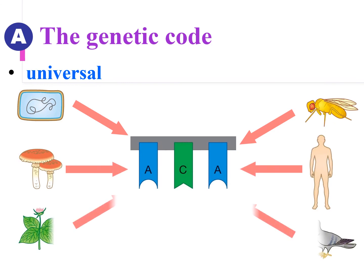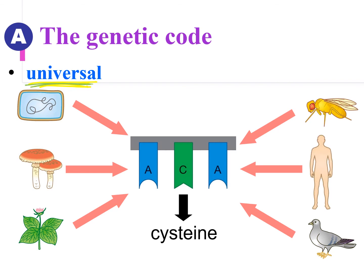The last property of the genetic code is that it is universal. Universal means that as long as you have the triplet code ACA, for example, you must produce the amino acid cysteine — no matter what organism you are. Whether you are a bacterium, a mushroom, a plant, a fly, a human, or a bird, as long as you have the triplet code ACA, you must produce the amino acid cysteine. Using this universal property, we can put different genes or genetic codes into different organisms and require them to produce the amino acid we want.